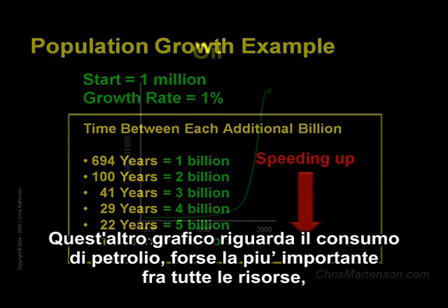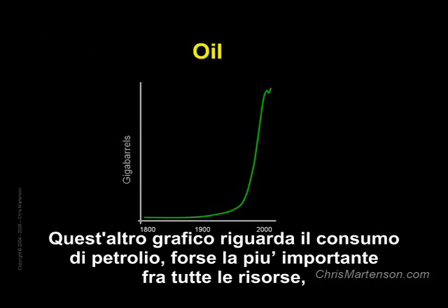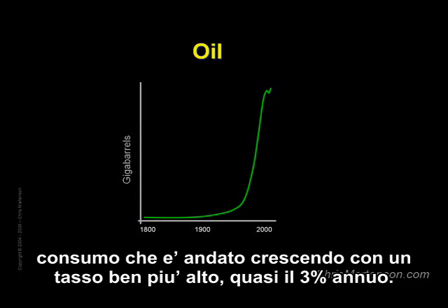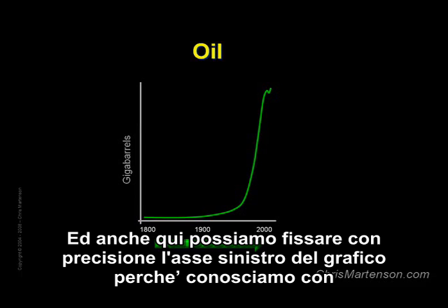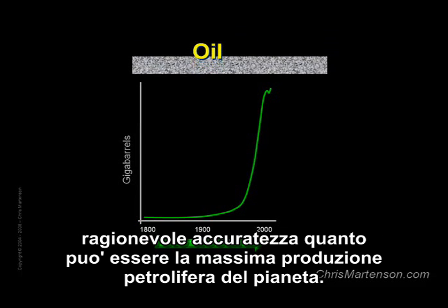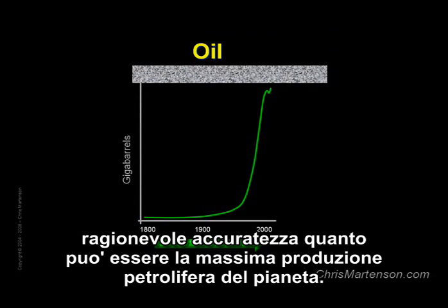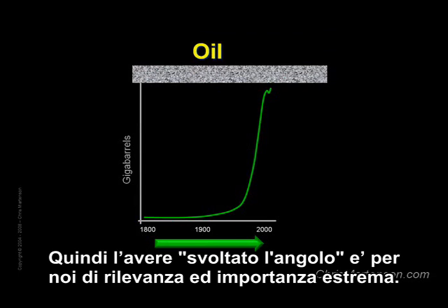This next chart is of oil consumption, perhaps the most important resource of them all, which has been growing at the much faster rate of nearly 3% per year, so we can detect the hockey stick shape over the course of just 150 years. And here too, we can fix the left axis with some precision, because we know with reasonable accuracy how much oil the world can maximally produce. So again, having turned the corner is an extremely relevant and important event to us.